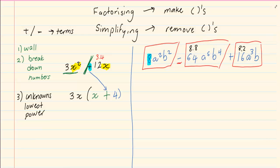Now the following step would be to see what is the same in each question. Now each question has an 8, so I can take out 8 as a common. And then we have to look at the unknowns. But when we are looking at the unknowns remember to take the lowest power.